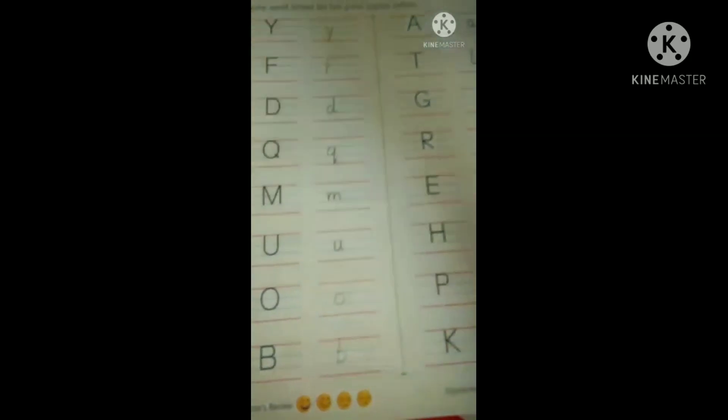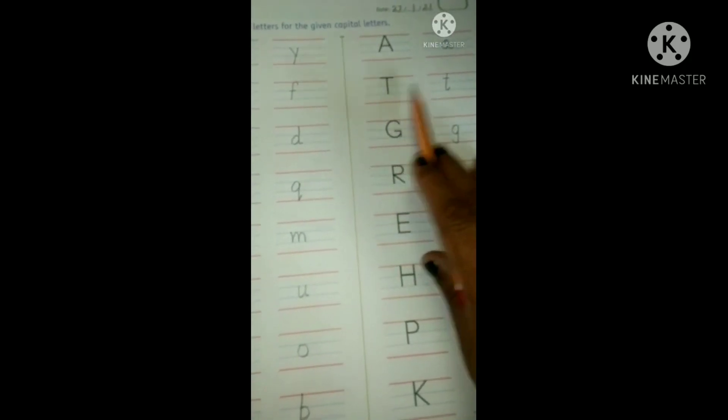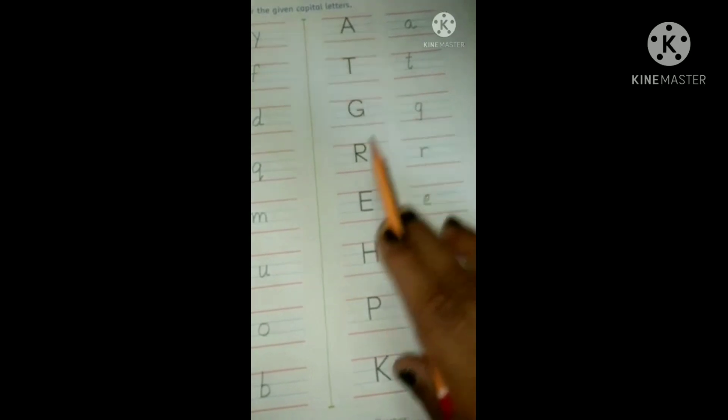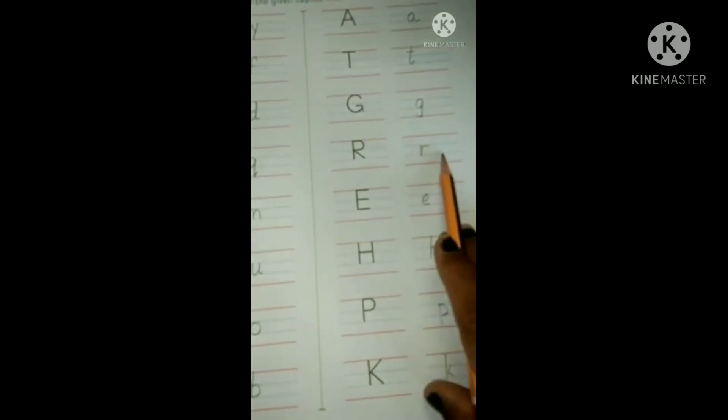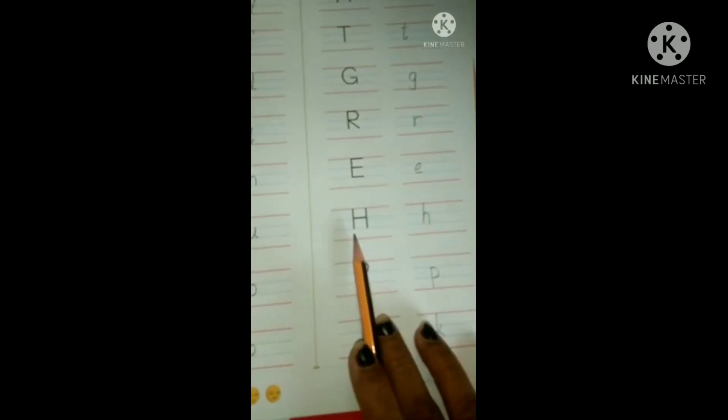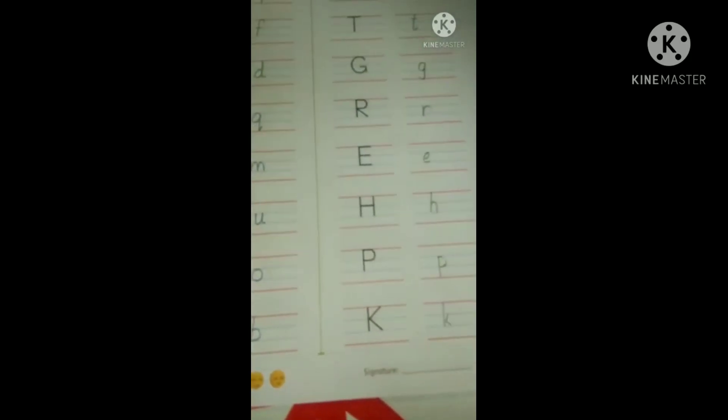Capital letter B, small letter B. Capital letter A, small letter A. Capital letter T, small letter T. Capital letter G, small letter G. Capital letter R, small letter R. Capital letter E, small letter E. Capital letter H, small letter H. Capital letter P, small letter P. Capital letter K, small letter K.